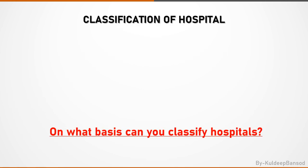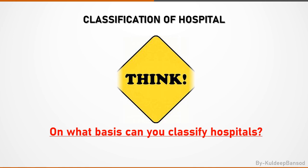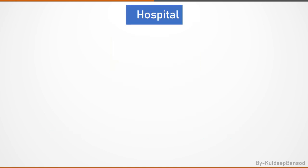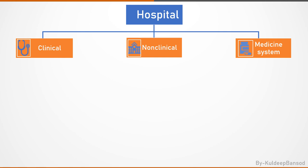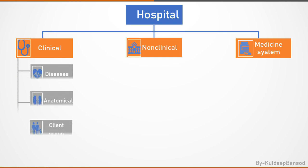There are various types of hospitals like pediatric, cancer, private, government hospitals, etc. Hospitals are classified on clinical, non-clinical, and system of medicine criteria. On a clinical basis, hospitals are further classified according to diseases, anatomy and physiological classification, and the types of patient.